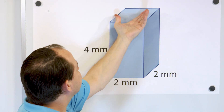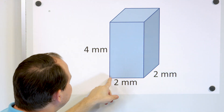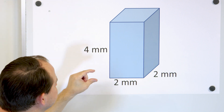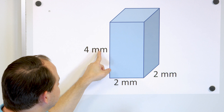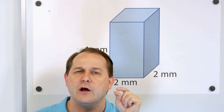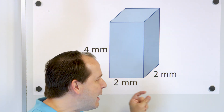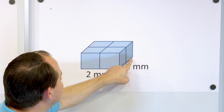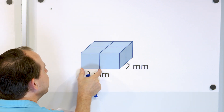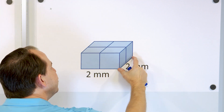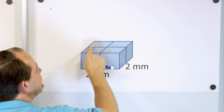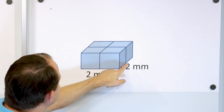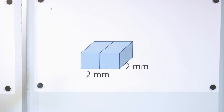Here's our next problem. We have a rectangular solid — also called a rectangular prism — that is two millimeters wide, two millimeters deep, and four millimeters tall. We want to figure out how many cubic millimeters fit inside. First we look at the bottom part: two millimeters wide and two millimeters deep, so we fit two one-millimeter cubes along the width and two along the depth. That gives us four cubes on the bottom layer — each one millimeter on every side, so each is one cubic millimeter.